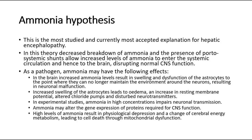In the brain, increased ammonia levels result in swelling and dysfunction of the astrocytes, to the point where they can no longer maintain the environment around the neurons, resulting in neuronal malfunction. There is also increased swelling of the astrocytes, which leads to edema, an increase in resting membrane potential, altered chloride pumps, and disturbed neurotransmitters. In experimental studies, ammonia in high concentrations impairs neuronal transmission.